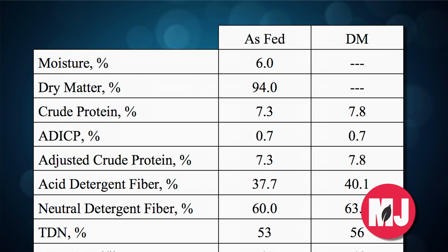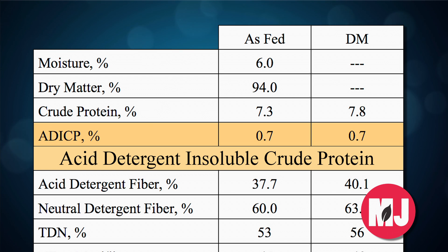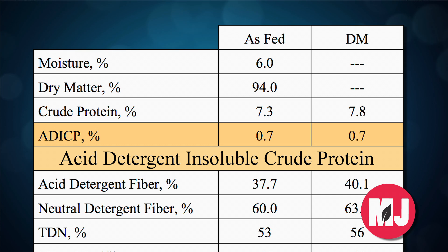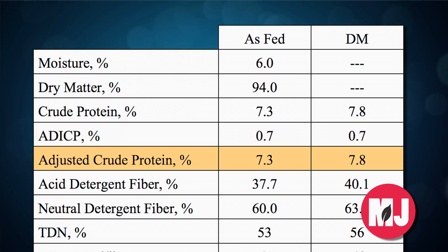As we look at some of the other numbers in here, there's one — the ADICP — which stands for acid detergent insoluble crude protein. Now that's quite a mouthful, and that's why they abbreviate it. Some labs will list this as heat damage protein; the labs may call it acid detergent fiber protein, but it refers to protein that's bound up in the fiber and isn't going to be readily available to the animals. All forages have some of that, and in the situation here we see that a little less than one percent of the dry matter is in that form.